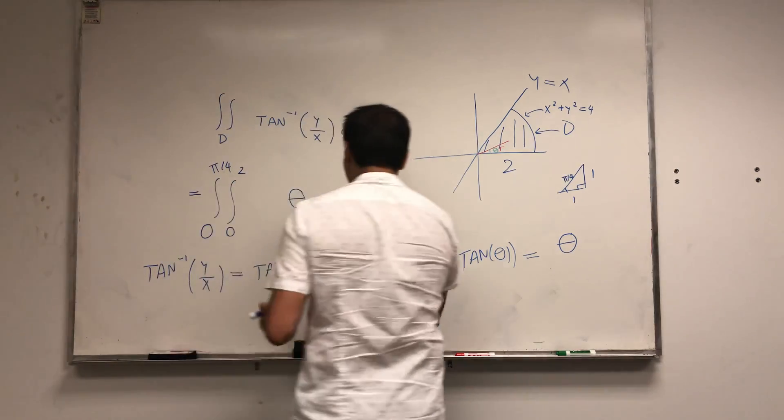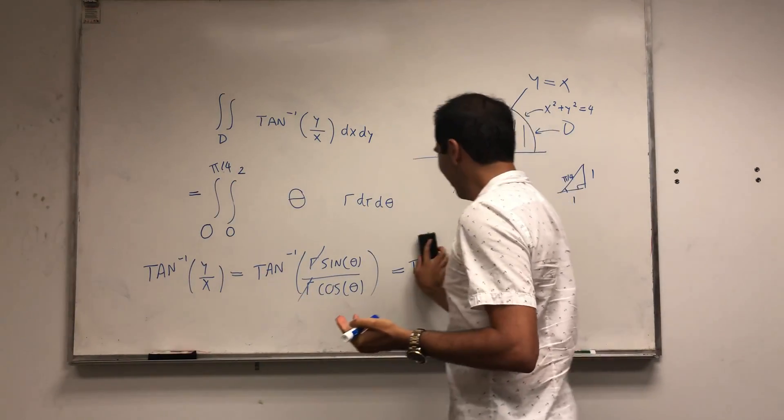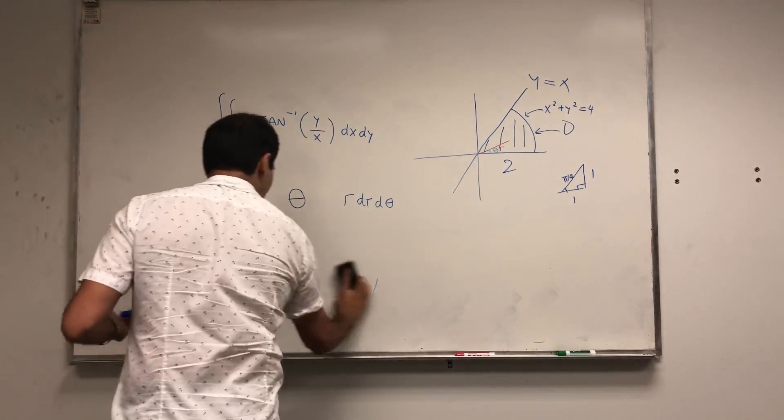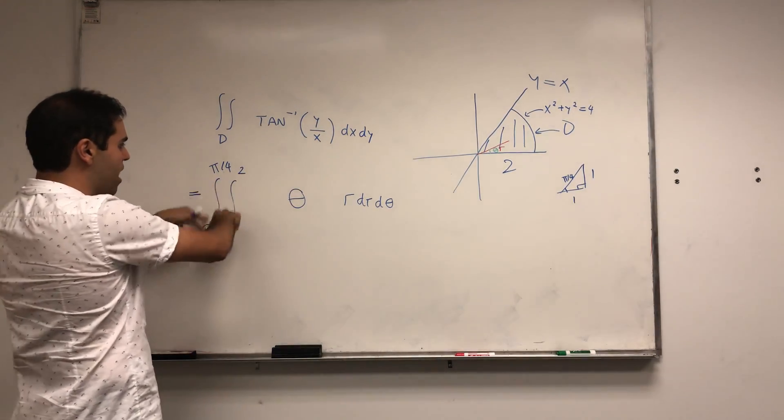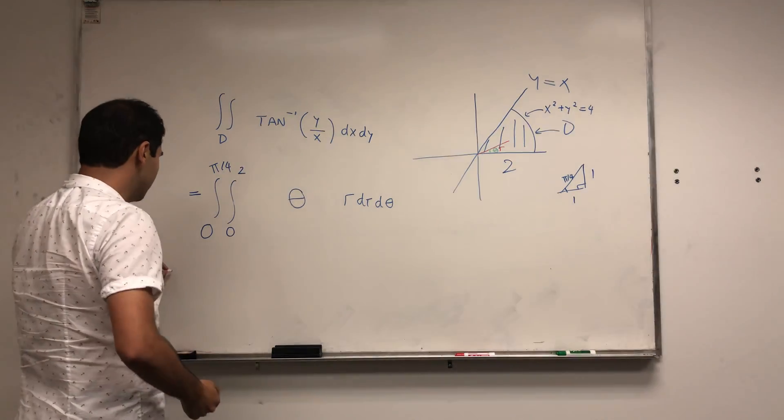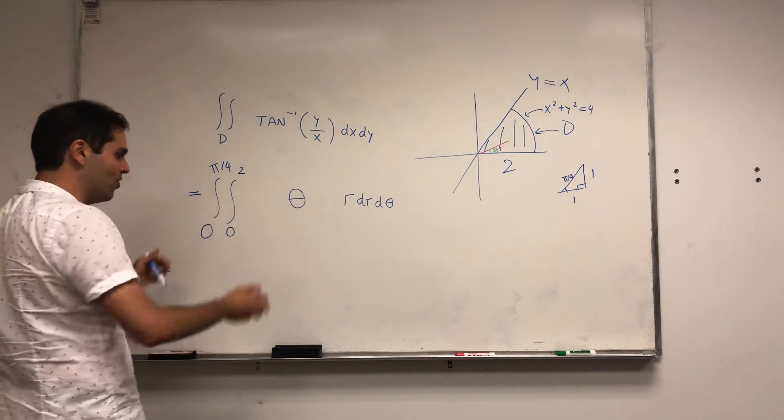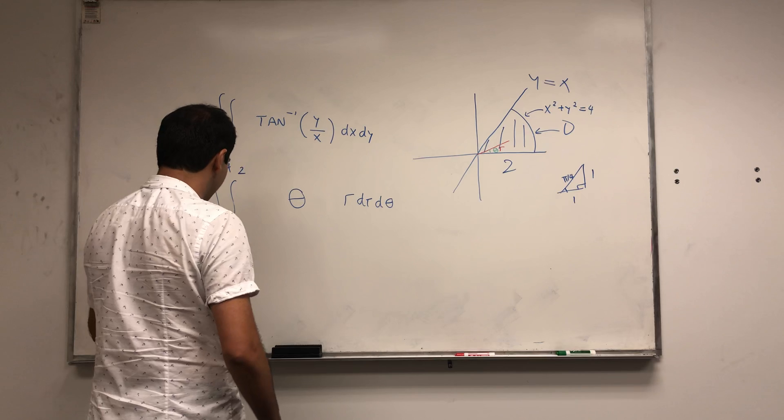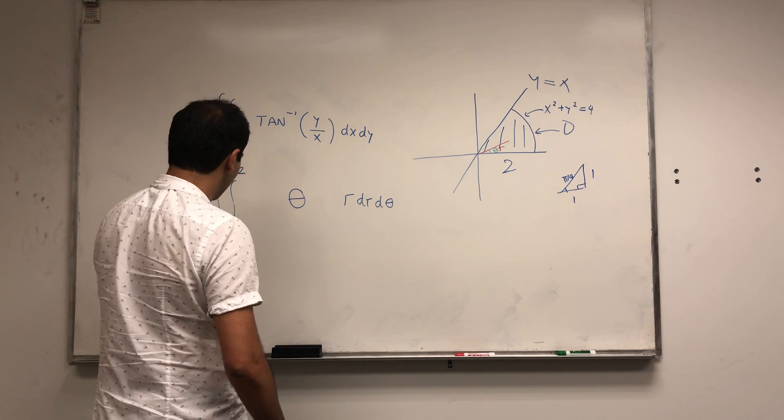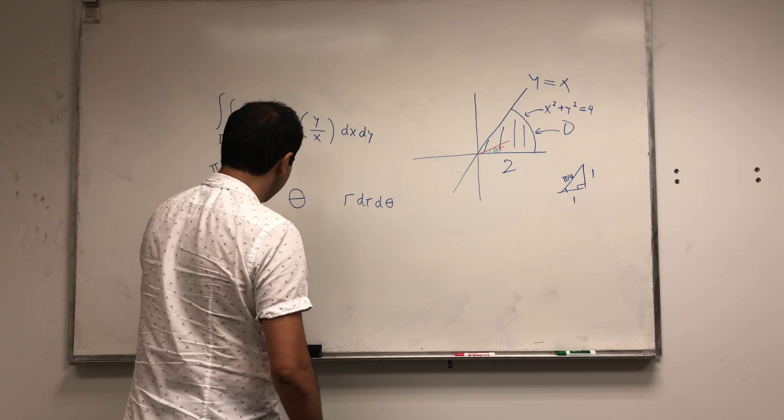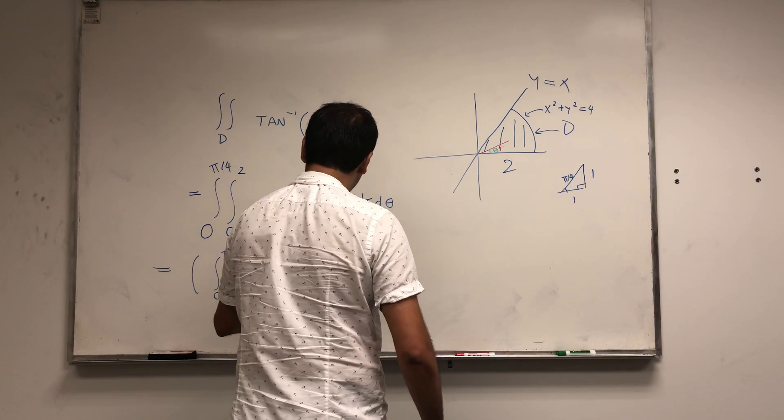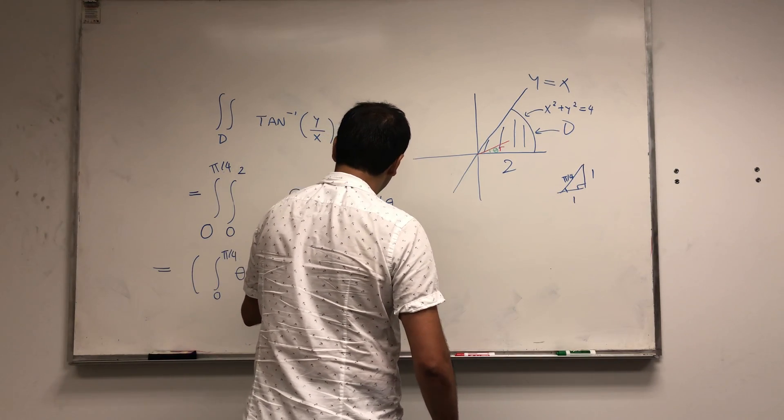Okay, and now let's evaluate the integral. The nice thing is here we have two things depending on two different variables and we have constant endpoints. So it turns out this integral is just a product of two things: namely the integral from 0 to pi over 4 of theta d theta, and the integral from 0 to 2 of r dr.